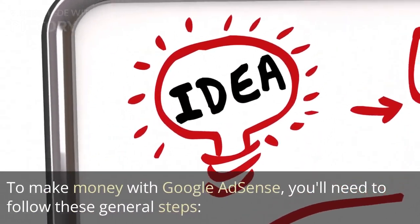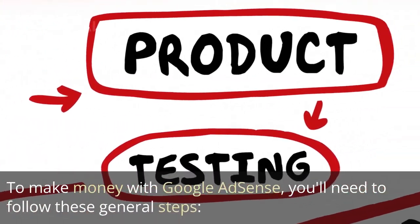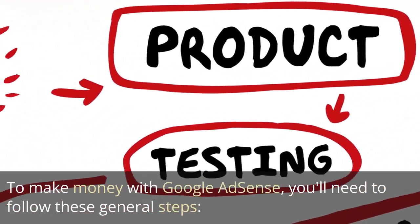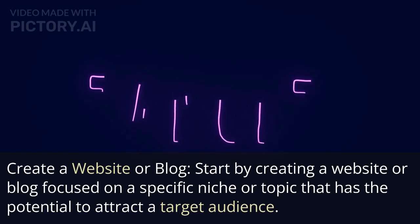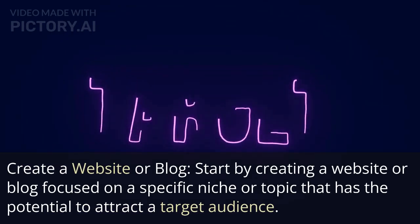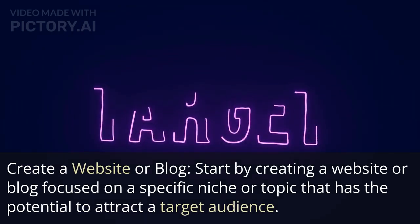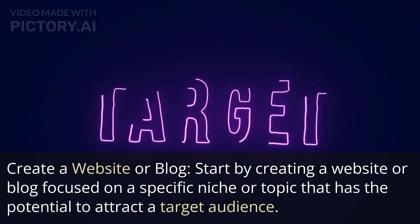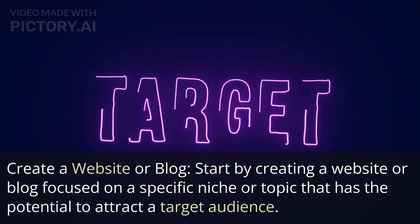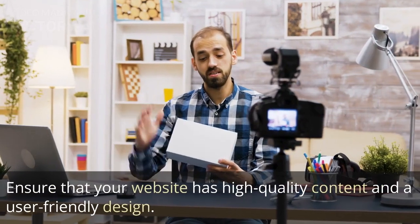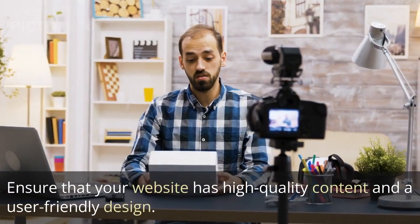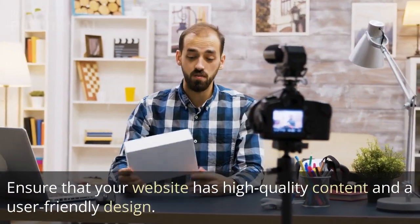To make money with Google AdSense, you'll need to follow these general steps. Start by creating a website or blog focused on a specific niche or topic that has the potential to attract a target audience. Ensure that your website has high-quality content and a user-friendly design.